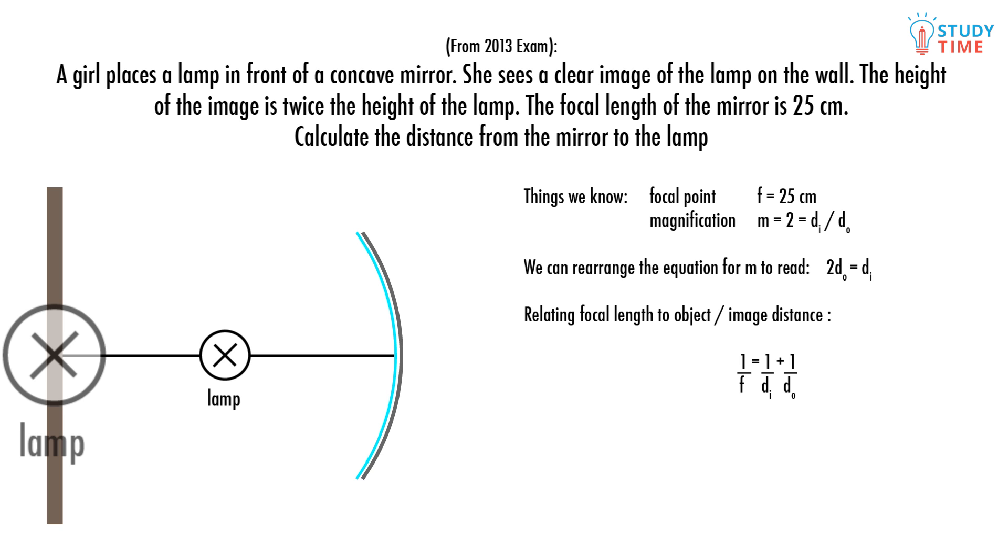Substituting in what we figured out before, we've got one over 25 centimeters equals one over 2 do plus one over do, or 1.5 over do. Rearranging, we just have the object distance equal to 37.5 centimeters, which wasn't too hard to find if we use the information they give us to figure out what they don't give us.